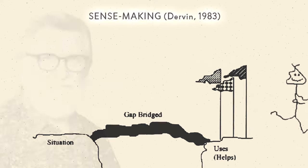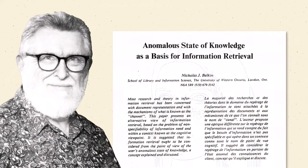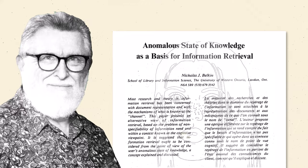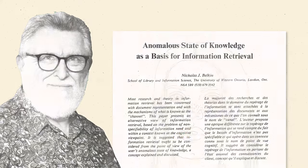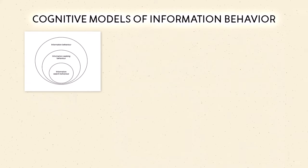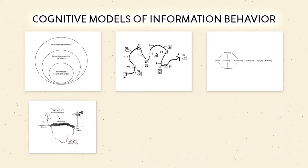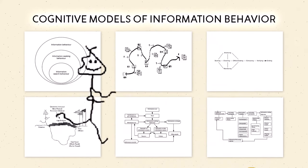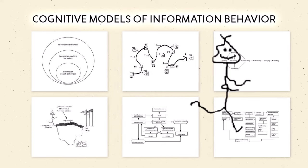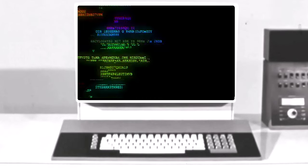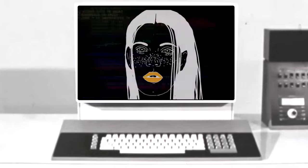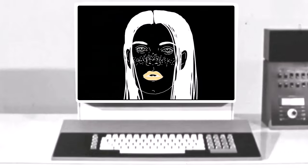Similarly, Nicholas Belkin's concept of anomalous state of knowledge recognized how human beings respond to unknowns. This turn generated hundreds of models, each suggesting the way people think or act in relation to information. The cognitive turn shifted information science from its technical stronghold of information retrieval systems to the social scientific study of human information behavior.